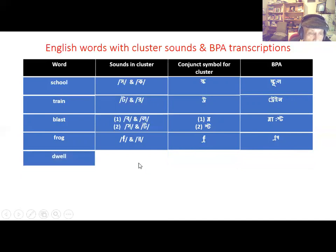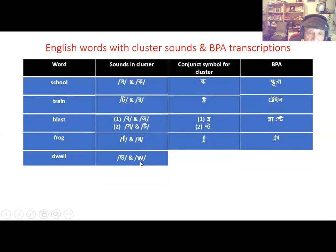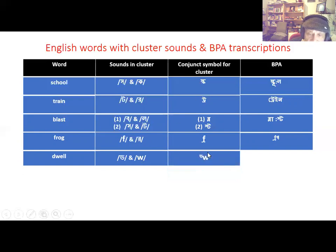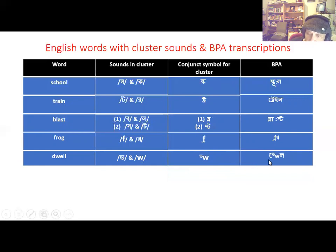'Dwell' — here the cluster sound is /dw/, where we have the two individual sounds /d/ and /w/. The /w/ symbol is imported from English to represent the w-sound. The conjunct symbol for this cluster sound in BPA combines d and w, so we write the pronunciation of 'dwell' in BPA as: dwell.